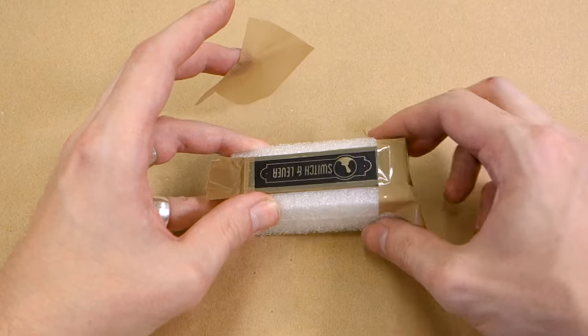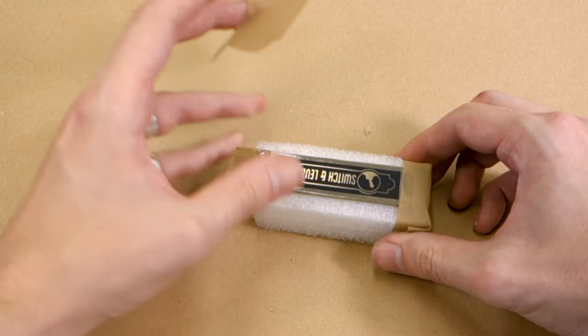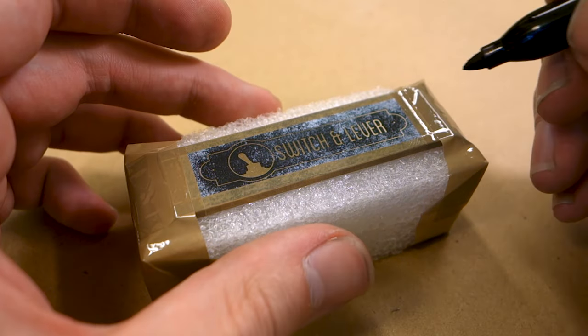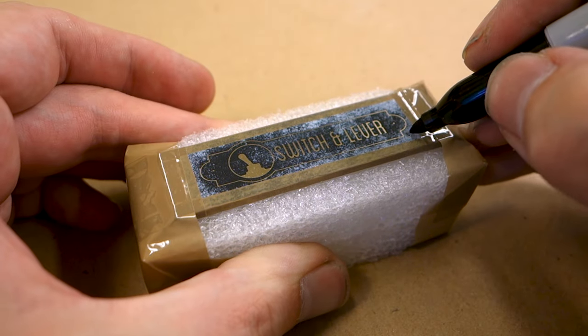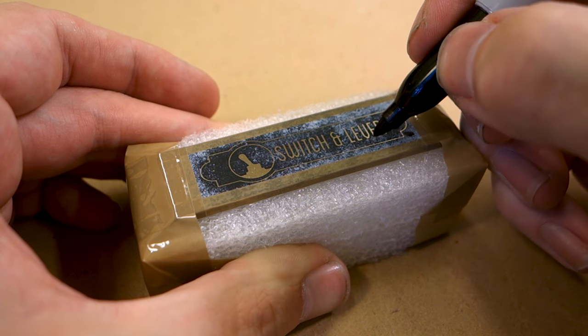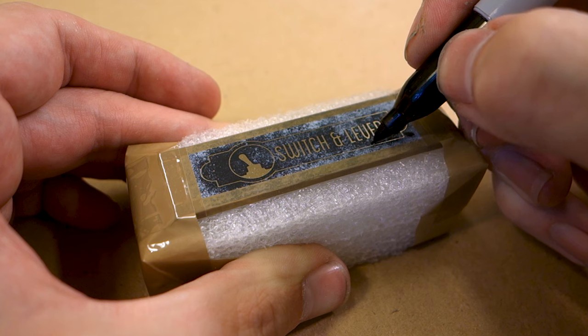In case there are some places on your designs which didn't come out quite properly or got damaged during the process, you can make some touch ups using a Sharpie before you start etching, as the Sharpie ink will work as an excellent resist as well. In fact you could draw a design only with Sharpie and it would work just as well.